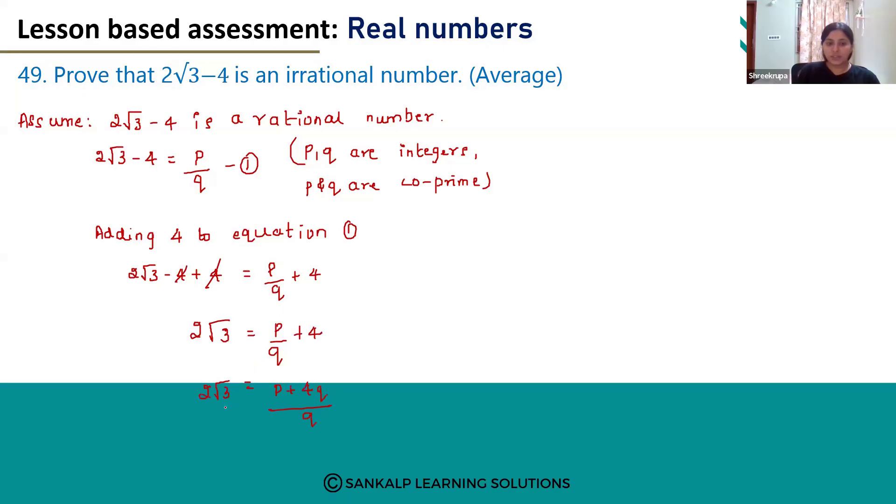We need √3 here, so we will shift this 2 to the denominator. This is the final equation we get, but we know that √3 is irrational and (p + 4q)/(2q) is a rational number. Irrational numbers cannot be equal to rational numbers.